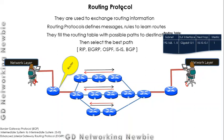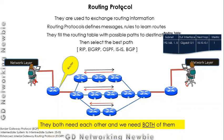So to summarize: the routed protocol carries our data and gives the packet its structure, while the routing protocol determines how to forward that data to the ultimate destination. Both need each other — the routed protocol needs the routing protocol, and the routing protocol needs the routed protocol. As users of a network, we need both of them. That was the difference between routing protocol and routed protocol.